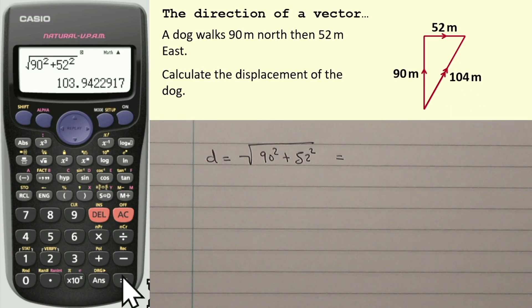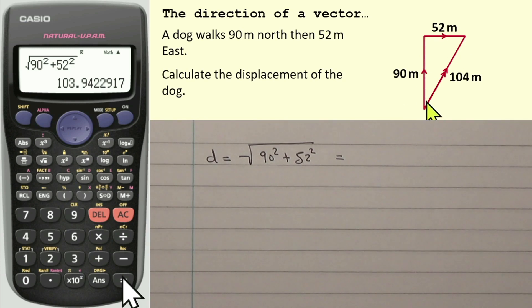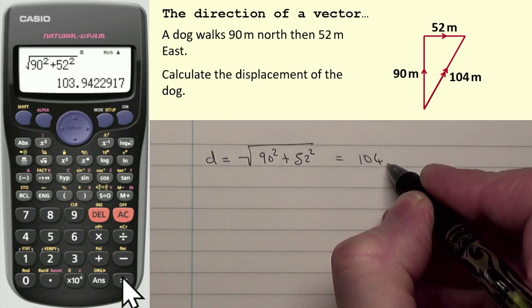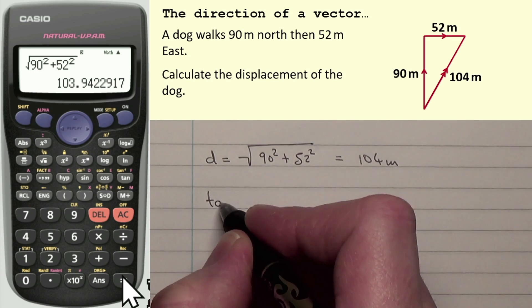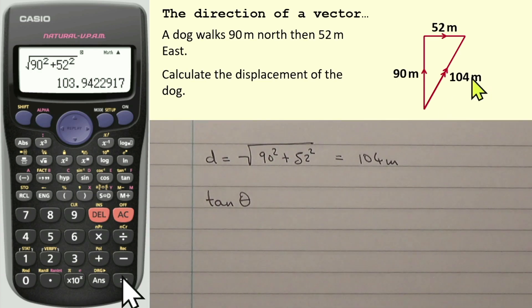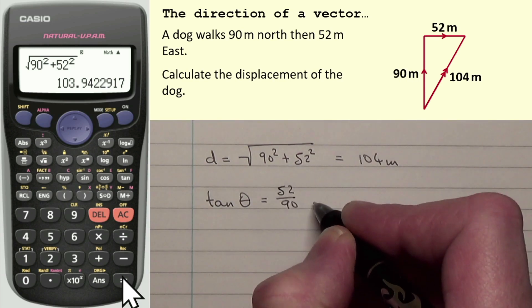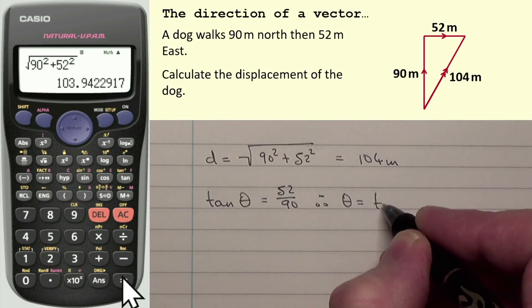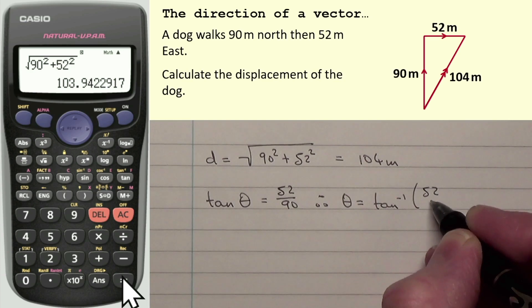To work out the direction of that displacement, I need to find this angle at the bottom of the diagram — that's where I started. The angle is between the first vector (north) and the resultant vector. Using SOHCAHTOA, tan of the angle equals opposite over adjacent, so tan θ = 52 over 90. Therefore θ = tan⁻¹(52/90). Make sure your calculator is in degrees mode. That gives 30.018°, which we round to 30 degrees.